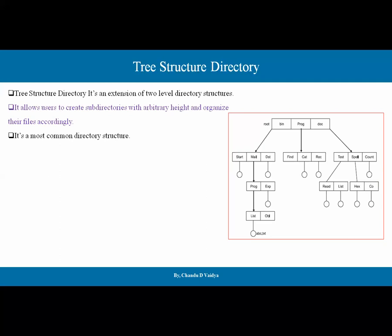If we look at this in Windows, the tree-level structure is very common. It supports both types of directories — that is, the current directory and the working directory — as well as both types of paths, that is, absolute path and relative path.